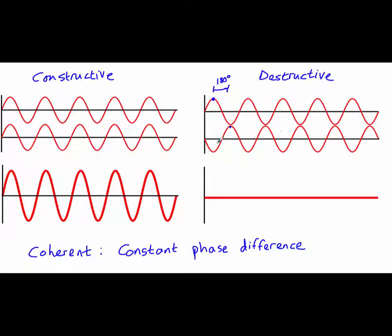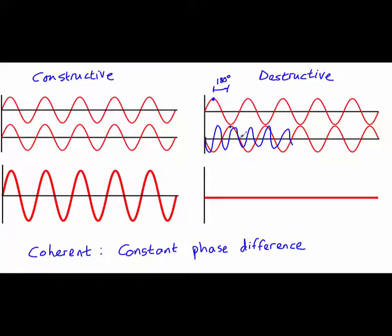If the two waves had different frequencies, you would see that they would go into phase and out of phase. For example, this wave here has a smaller and varying frequency. You can see that at certain points it ends up in phase, while at other points it is out of phase again. So these two waves would not count as being coherent, and therefore we wouldn't get an interference pattern.